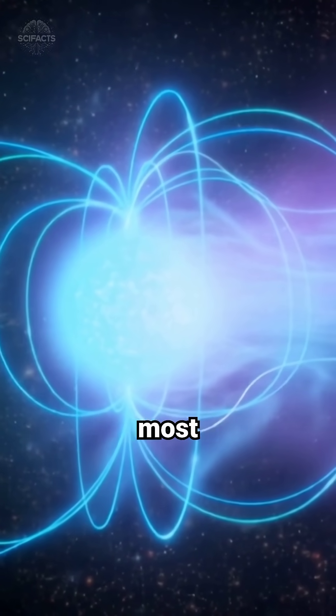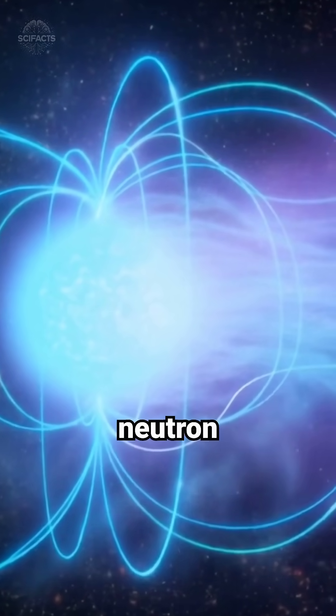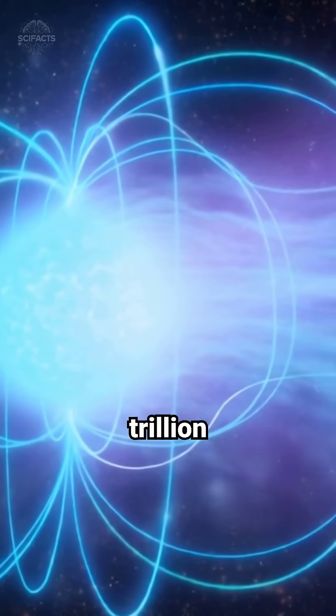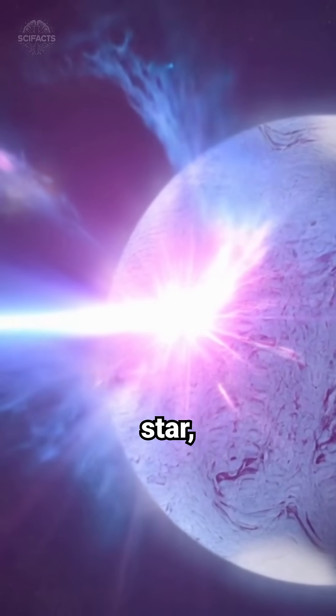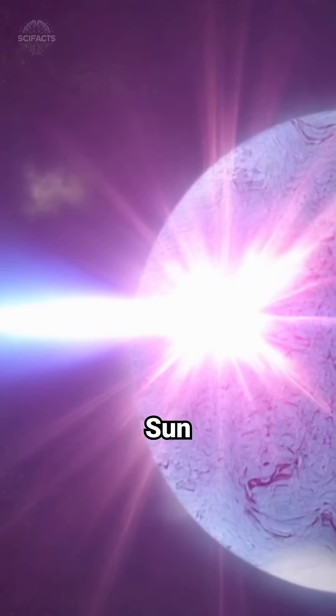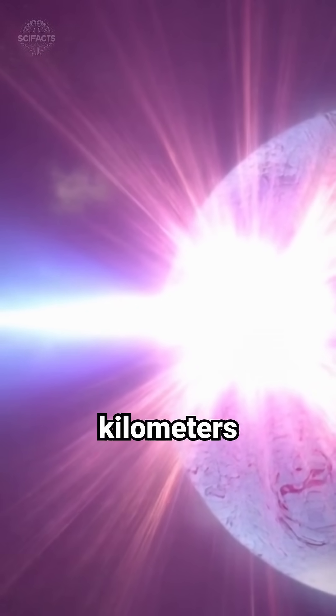A magnetar is one of the universe's most extreme wonders, a neutron star with a magnetic field a trillion times stronger than Earth's. Born from the collapsed core of a massive star, it condenses more mass than the Sun into a sphere just 20 kilometers wide.